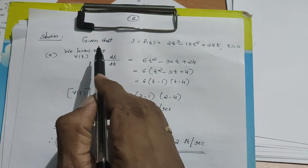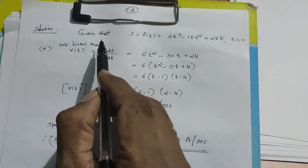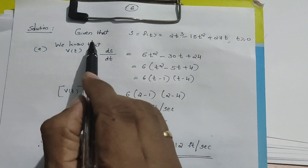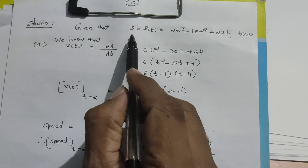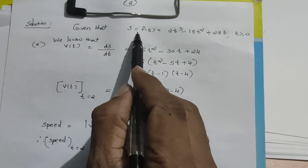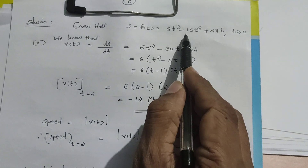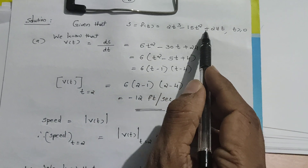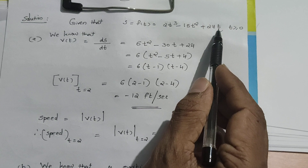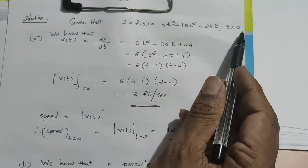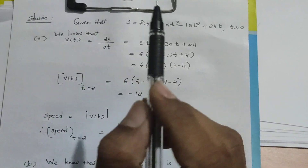We have the given position function s(t) = (1/2)t³ - 15t² + 24t, with t greater than or equal to 0.